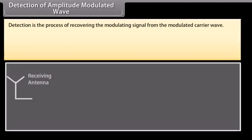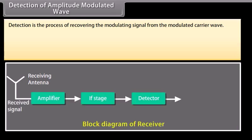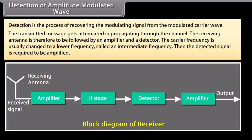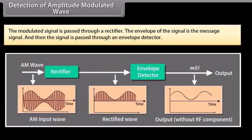Detection of amplitude modulated wave: detection is the process of recovering the modulating signal from the modulated carrier wave. The transmitted message gets attenuated in propagating through the channel, so the receiving antenna is followed by an amplifier and a detector. The carrier frequency is usually changed to a lower intermediate frequency. The modulated signal is passed through a rectifier, and the envelope of the signal — which is the message signal — is then extracted through an envelope detector.